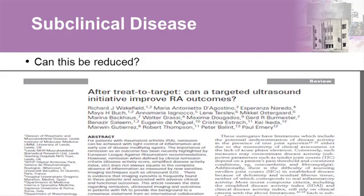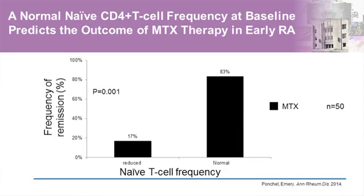There is a true window of opportunity, and many of us have been pursuing the pathophysiological basis for this. We have subclinical disease and immune dysregulation; you need to catch patients extremely early. One explanation is the age-corrected naive T-cell frequency: if abnormal and you give methotrexate, there's a very low chance of remission. But if the immunology is essentially normal, methotrexate works brilliantly — explaining striking results seen with very early methotrexate use in the preclinical era.